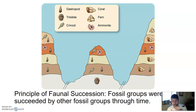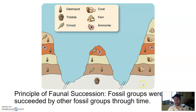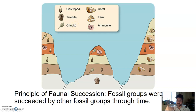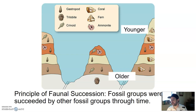One last principle of stratigraphy is the principle of faunal succession. We won't touch on it too much in this class — you will in Geology 102. It states that fossil groups were succeeded by other fossil groups through time. If I want to find a trilobite, a very old ancient organism, it will be with some of the oldest rocks. If I'm looking for ferns or crinoids, these are younger fossils found higher up where younger rocks are. It's kind of like the principle of superposition, but for fossils.